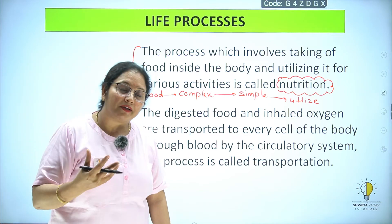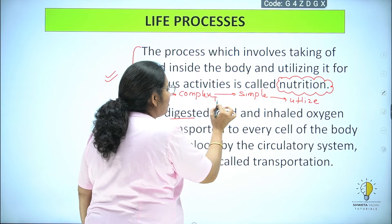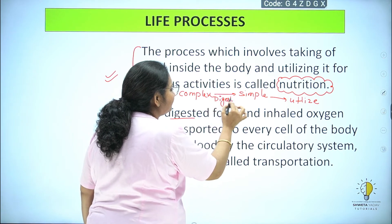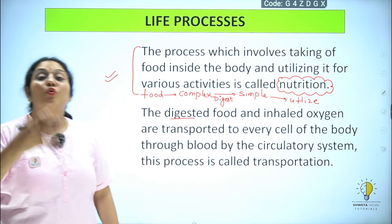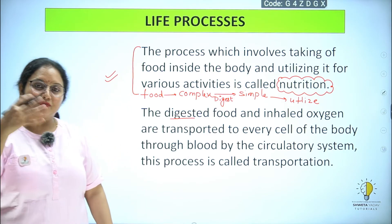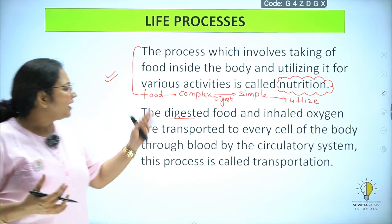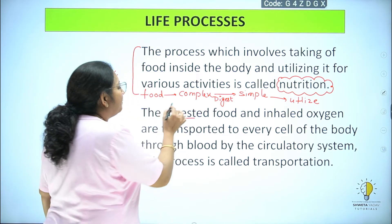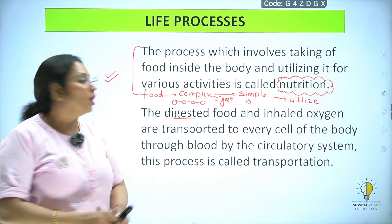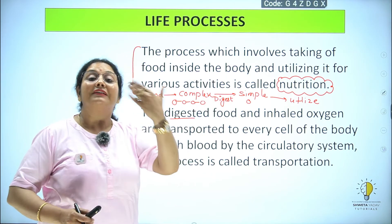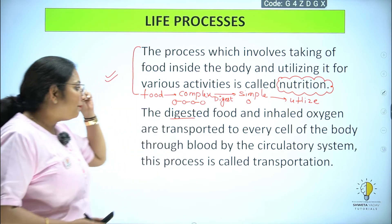जो food हमने खाया उसको हम बोलेंगे digest करना, पचाना। Digest करने के लिए बहुत सारे body के organs काम करेंगे — हम खाना खाएंगे, वो digestive system में जाएगा, stomach में store होगा। Stomach में कुछ enzymes होंगे, mouth में कुछ enzymes होंगे, small intestine में कुछ enzymes होंगे जो food को digest कर देंगे — वो complex simple में convert हो जाएगा। Complex से simple में convert होने के बाद उसको utilize करना आसान रहेगा, otherwise complex food को हमारी body accept करने से मना कर देती है।